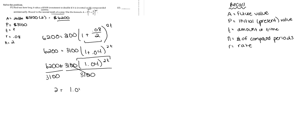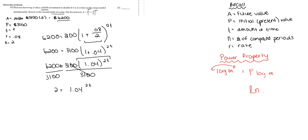Now we'll use our logarithmic properties — specifically the power property, which states that log base M to the P equals P times log base M. We apply the natural log (LN) to both sides. This lets us bring the exponent forward, giving us: LN(2) equals 2T times LN(1.04).